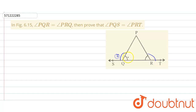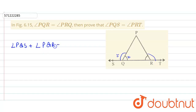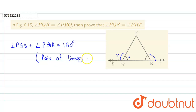We know that this angle and this angle are a pair of linear angles, so the sum of these two angles will be equal to 180 degrees. Therefore, angle PQS plus angle PQR is equal to 180 degrees. The reason is that they form a linear pair of angles.